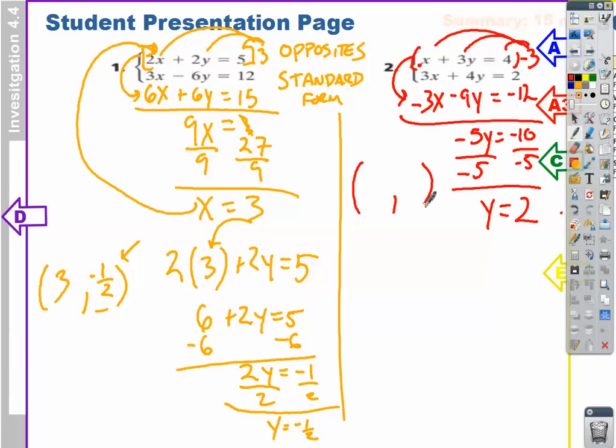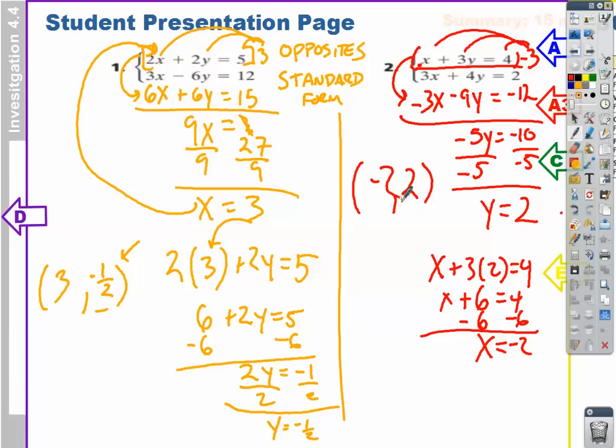Now I can do my addition. So 3x minus 3x is just 0. 4y minus 9y is negative 5y, and that equals negative 10. The opposite of multiplying by negative 5 is dividing by negative 5, and I get y equals 2. But you're not done, because now we have to find our x value. So I'm going to use this first equation. I have x plus 3 times 2 equals 4. 3 times 2 is 6, plus x equals 4. The opposite of adding 6 is subtracting 6 from both sides. So I get x equals negative 2.